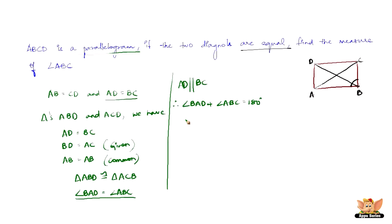Now, why is this? Because angles on the same side of the transversal sum up to 180 degrees. Since we have angle BAD equals angle ABC, we can write angle ABC plus angle ABC equals 180 degrees.